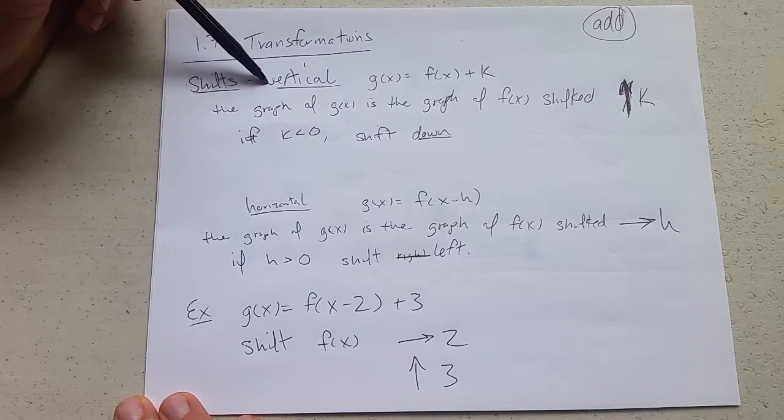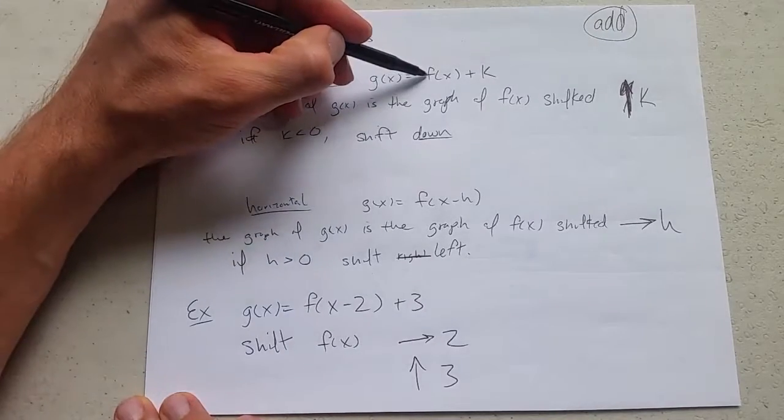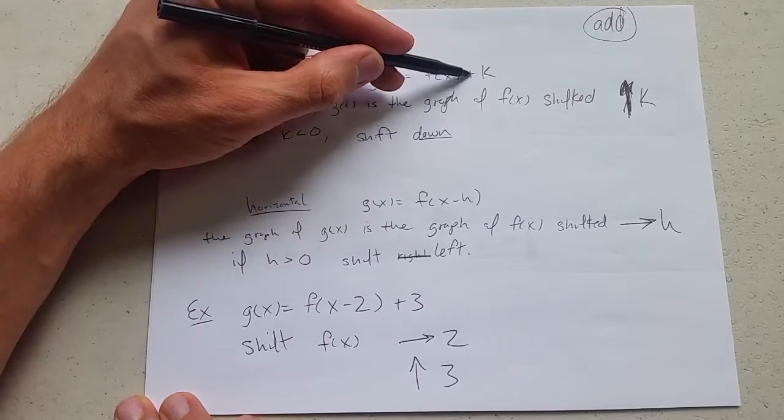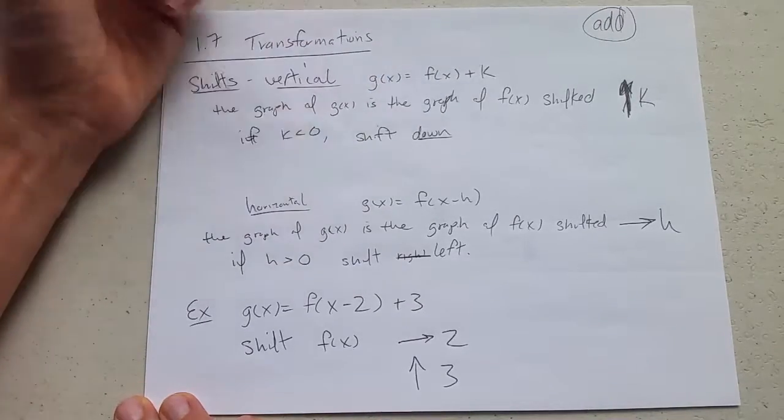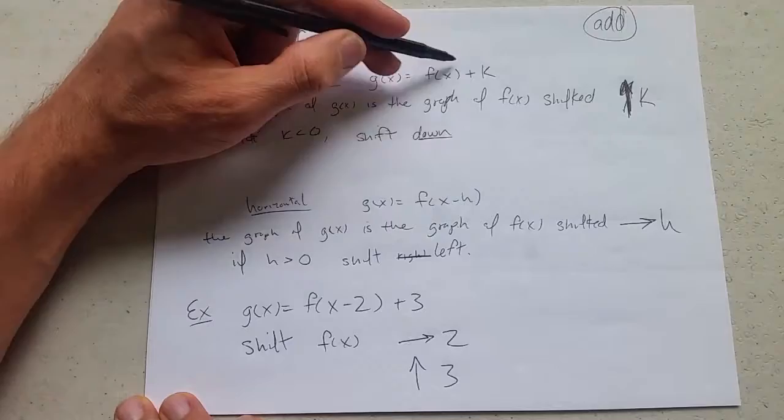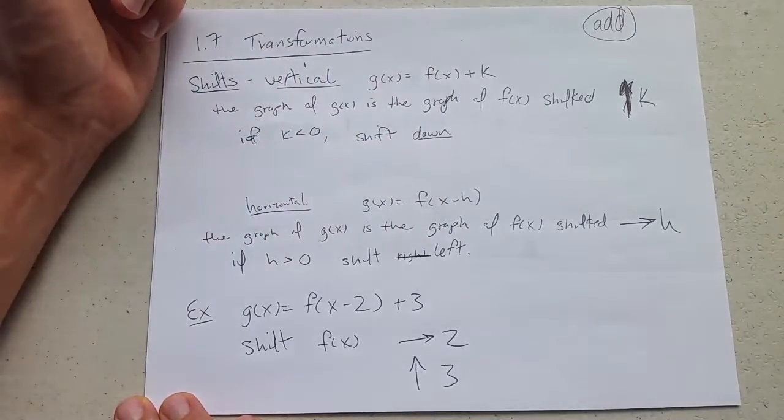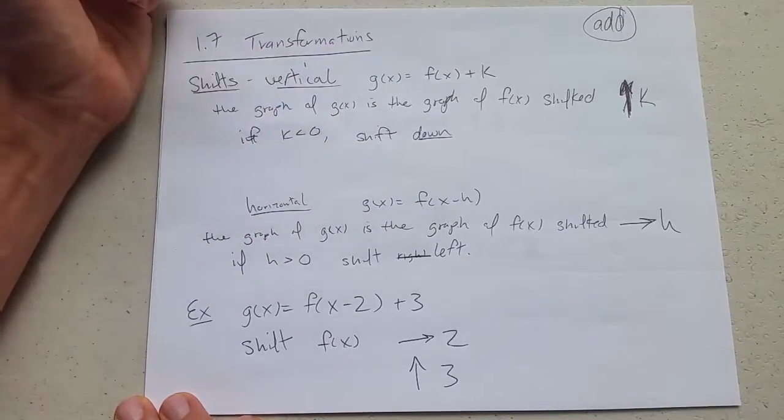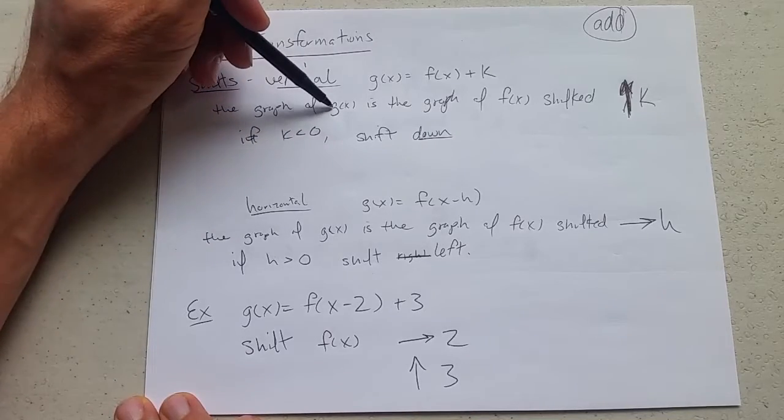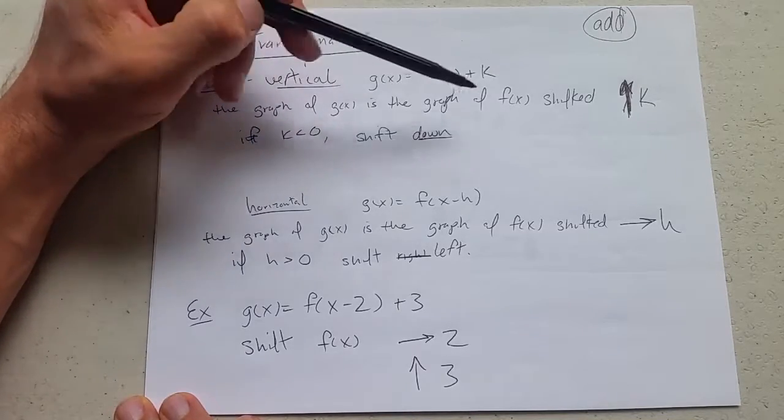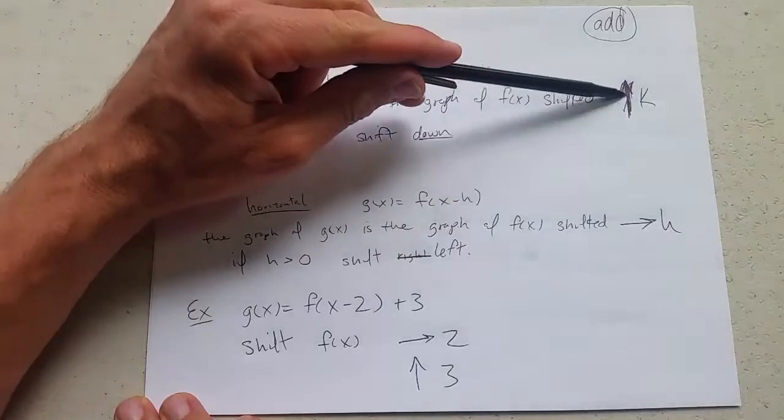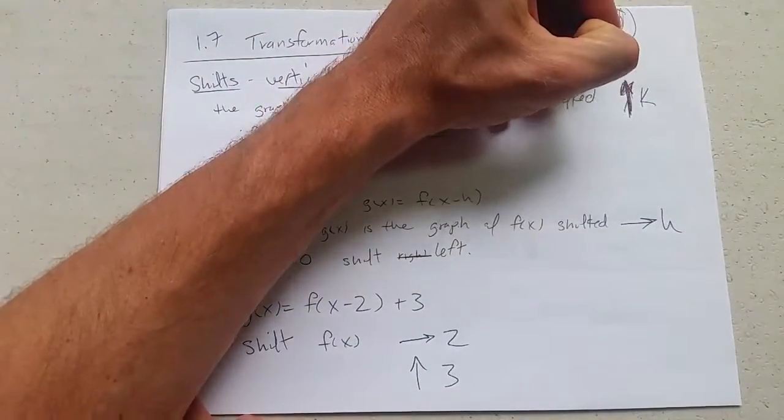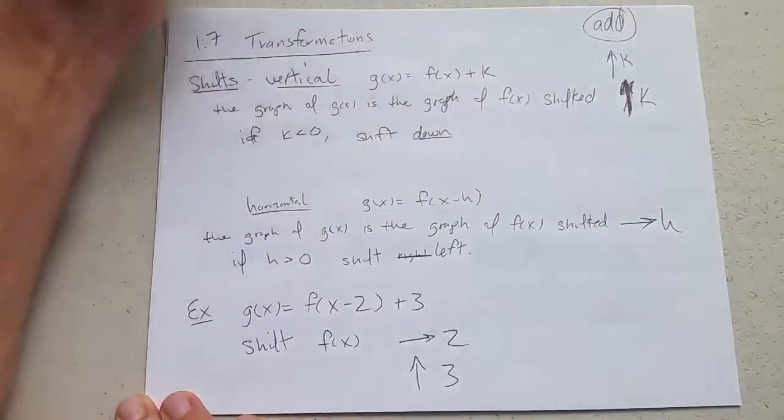How do they work? So vertical shift: if you have a function f of x and you add a number to it plus k, this new function we'll call g of x. So what happens to the graph when you add k to it? The graph of this new g of x is the graph of f of x shifted up—there should be an up arrow—up k units.